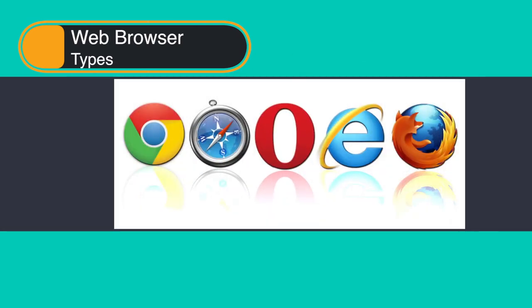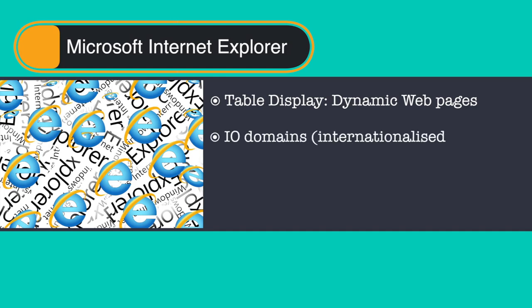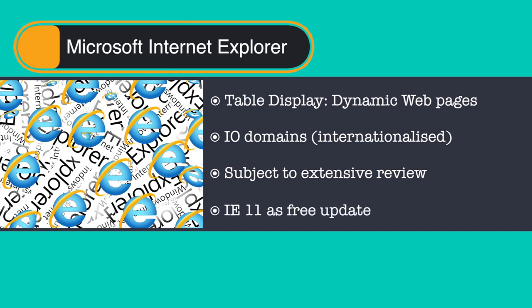Let me take you through the popular types of web browsers, though we discussed these in the previous module. The first is Microsoft Internet Explorer. Since its first release, it has added features and technologies such as basic table display, which aids creation of dynamic web pages, and internationalized domain names, which allow websites to have native language addresses with non-Latin characters. This browser has also been subject to security and privacy vulnerability reviews. The latest stable release is Internet Explorer 11, available as a free update for Windows 7 onwards.